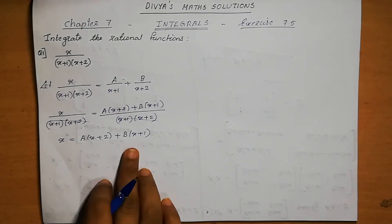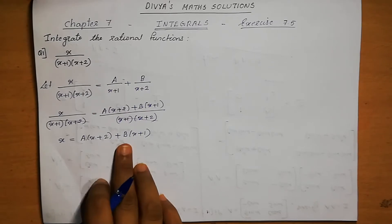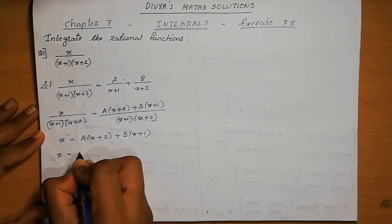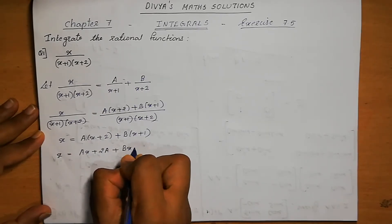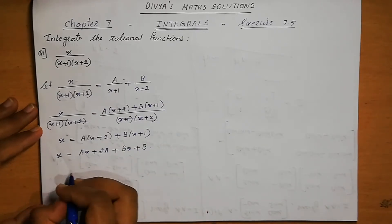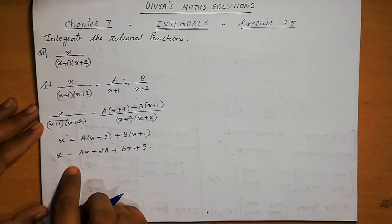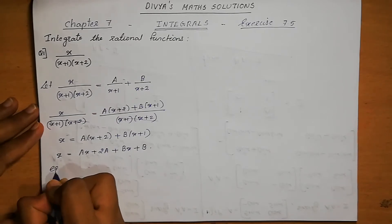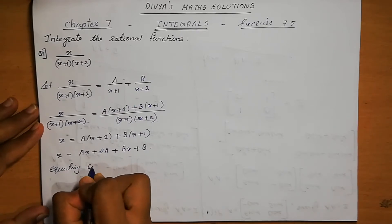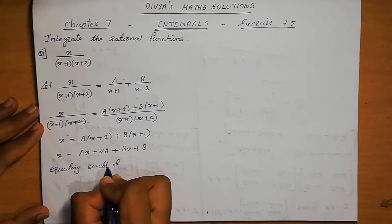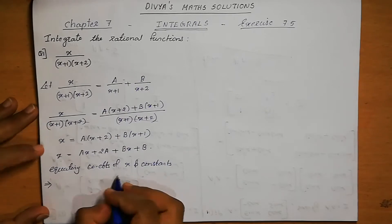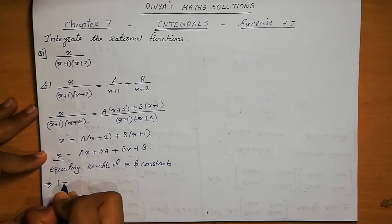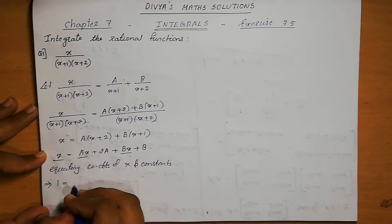Next, we find the values of A and B by equating coefficients. First, open the bracket: x equals Ax plus 2A plus Bx plus B. We equate coefficients of x and constants.